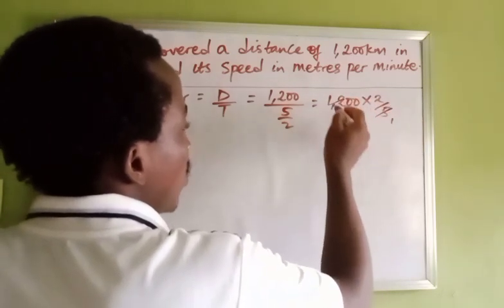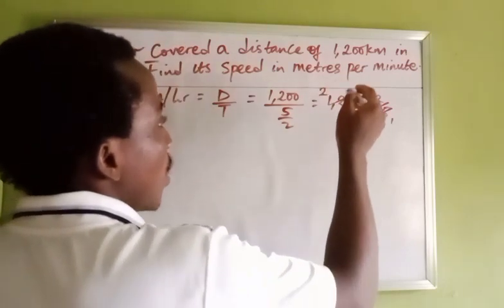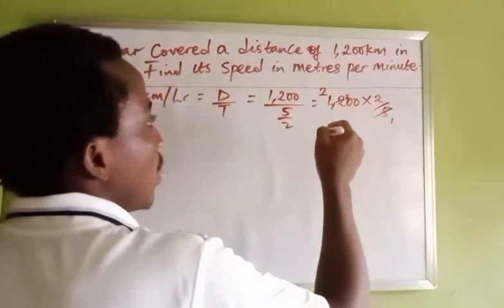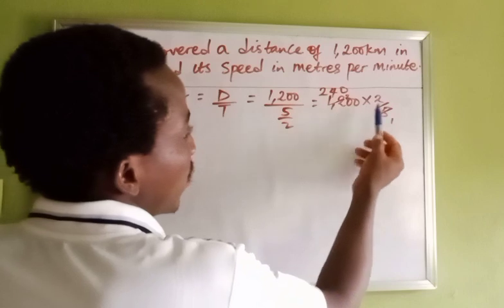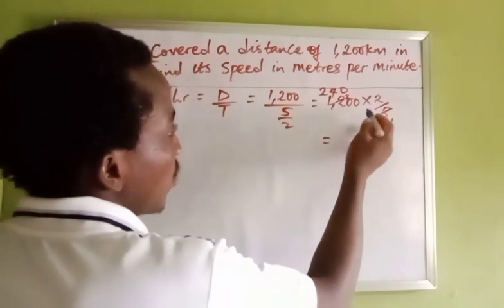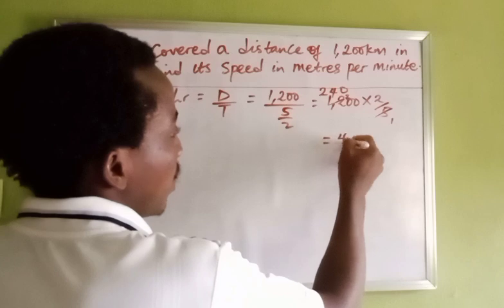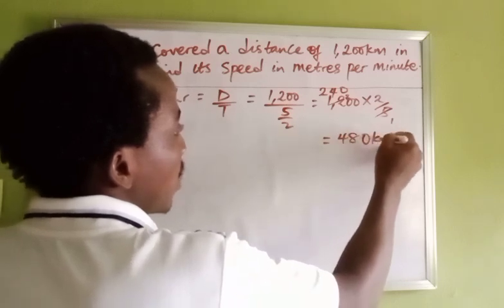Working through the division: 5 goes into 12 twice with remainder 2. In 20 will be 4. Then 240 times 2 gives us 480. So we get 480 kilometers per hour.